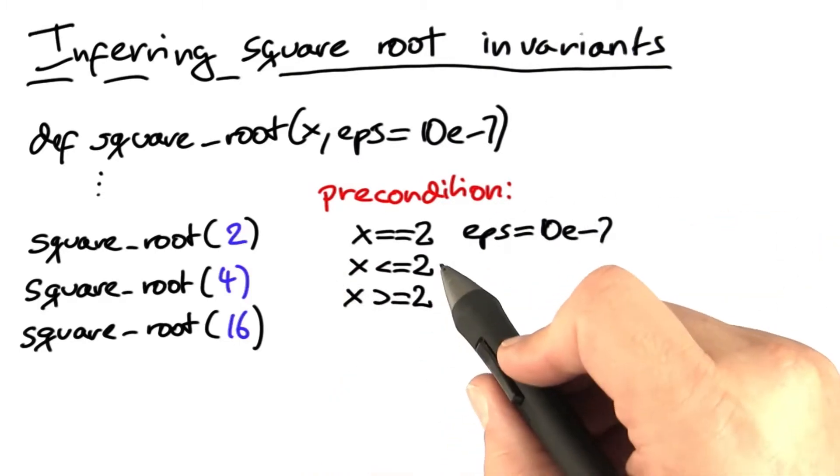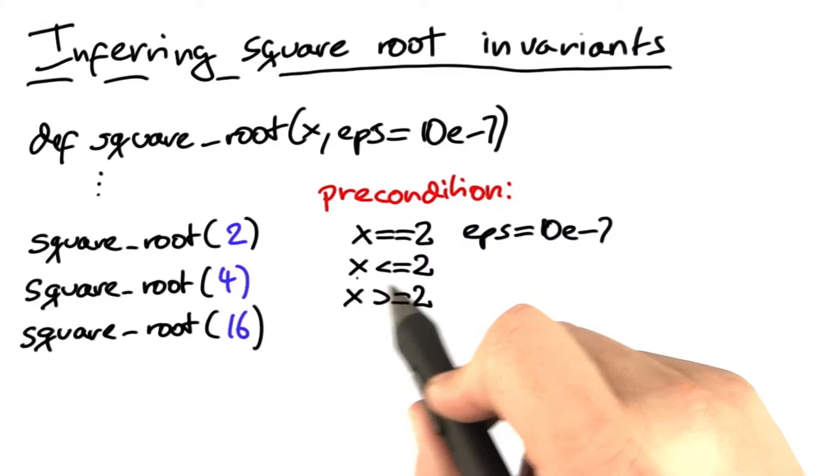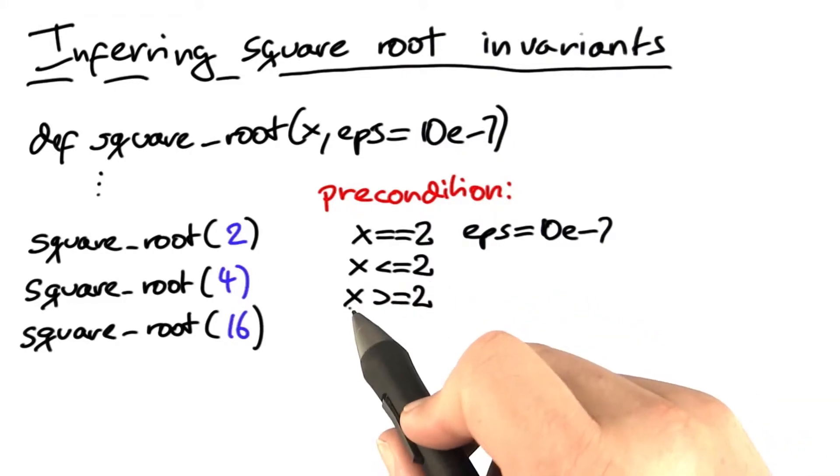When we invoke square root with a value of 2, we could infer that x has a value of 2 and eps has a value of 10 to the power of minus 7.